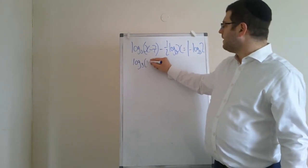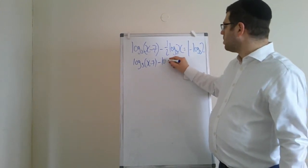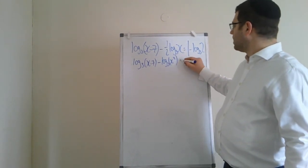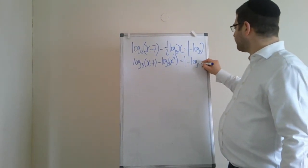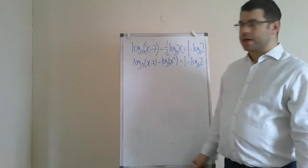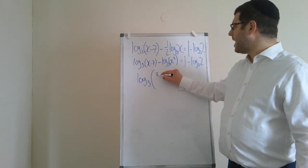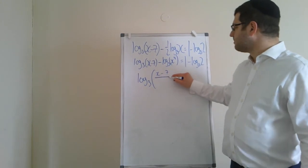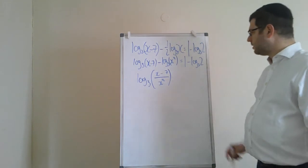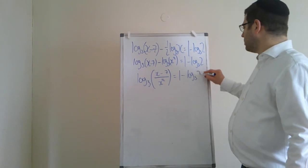Let's do log 3 of x minus 7, minus log 3 of x to the half. The right-hand side I will leave alone. Now we can combine them. They're subtracted, the coefficients are 1, so we divide. Log 3 of x minus 7 divided by x to the half is 1 minus log 3 of 2.